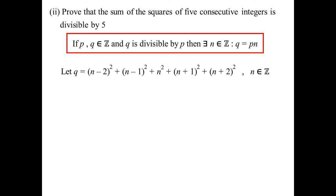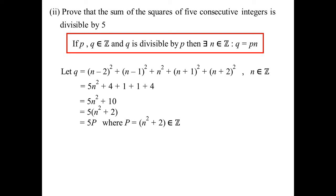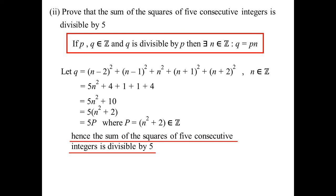So we end up with 5N² — they all produce an N² — plus the constant terms squared: 4, 1, 1, and 4, giving 5N² plus 10, which factorises by 5. P would be an integer because N is an integer, squaring gives an integer, and adding 2 gives an integer. So it is some multiple of 5 — that one's true. So those are examples of direct proofs: using facts to come up with a conclusion.